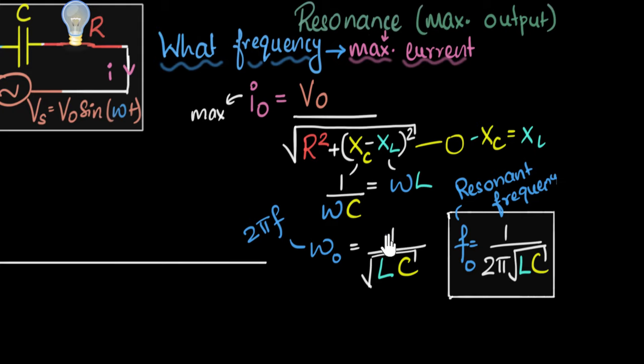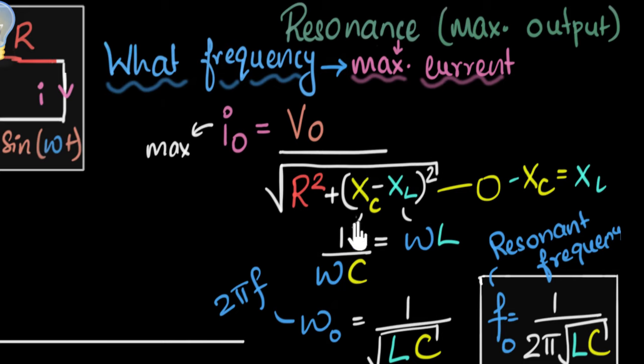Now what if we increase the frequency way higher than the resonant frequency — say about a thousand? Now the capacitive reactance is very small, but the inductive reactance is very large because omega is very high. So again, the impedance will be very high and the current will be very low. The bulb won't glow much. But when we enter the resonant frequency, these two terms cancel each other, the current becomes maximum, and the bulb will glow very bright. That is why this is called resonance — I'm getting the maximum output.